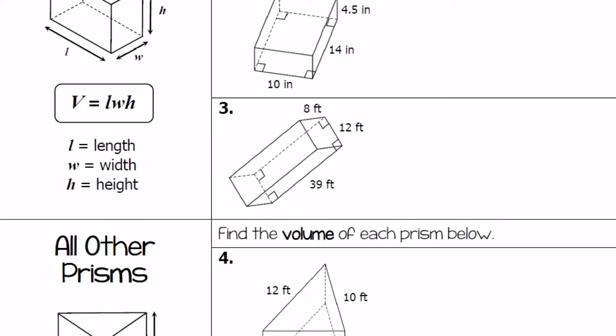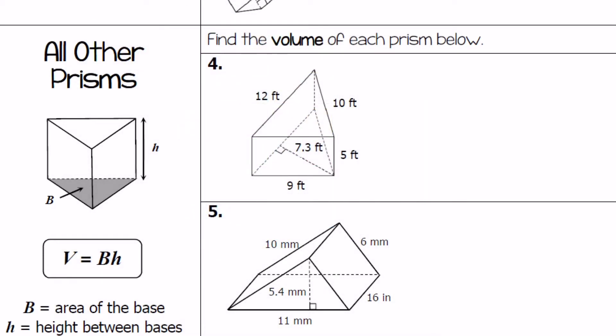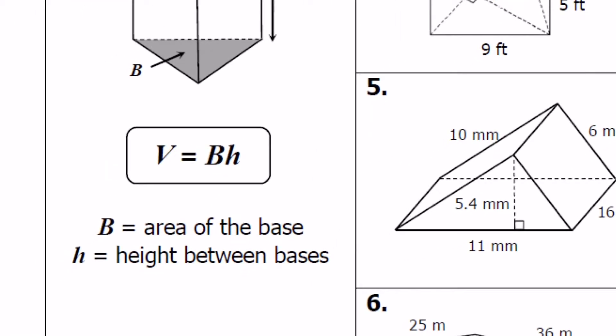So I'll leave you two and three to do. And I'm going to move on to all of the other types of prisms. And so all of the other types of prisms, the volume is the area of the base times that height between the bases.